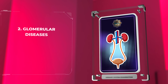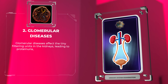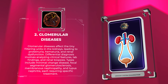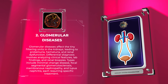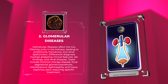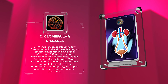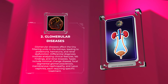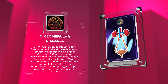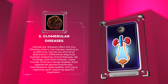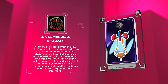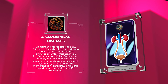Glomerular diseases affect the tiny filtering units in the kidneys, leading to proteinuria, hematuria, and renal dysfunction. Differential diagnosis involves analyzing clinical features, lab findings, and renal biopsies. Types include minimal change disease, focal segmental glomerulosclerosis, membranous nephropathy, and lupus nephritis, each requiring specific treatment.